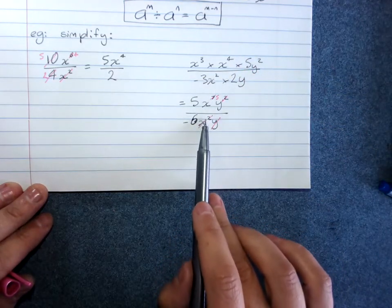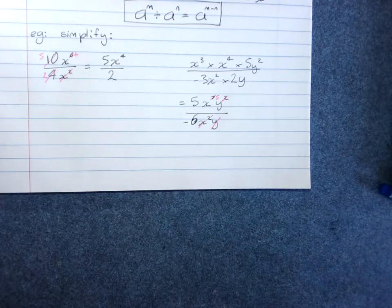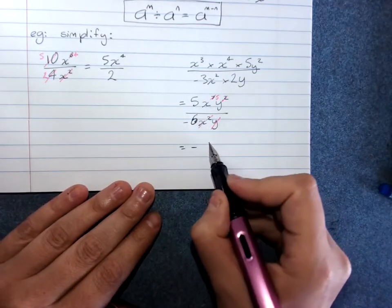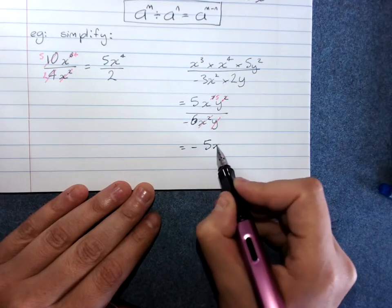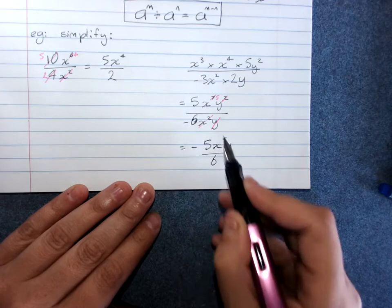Now if you've been dividing by something larger, if this was x to the 12, you'd be left with the x's down here. This will be dividing by a negative. So it's a negative result. 5 x to the 5 y over 6 negative out the front there.